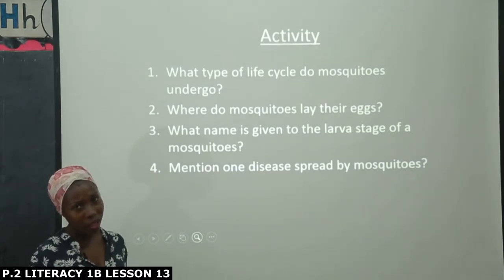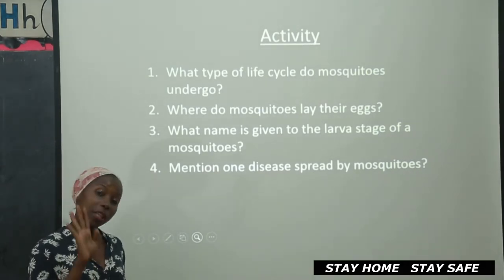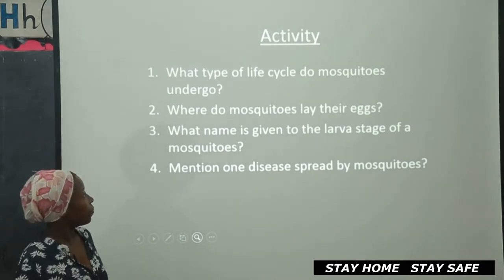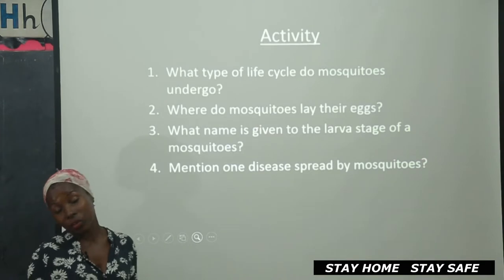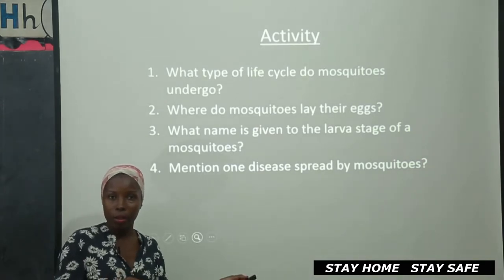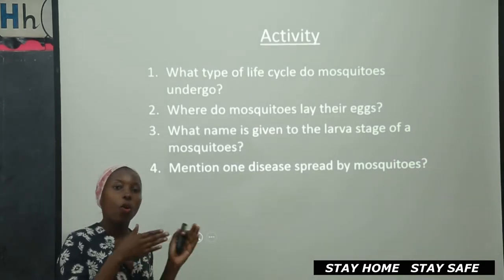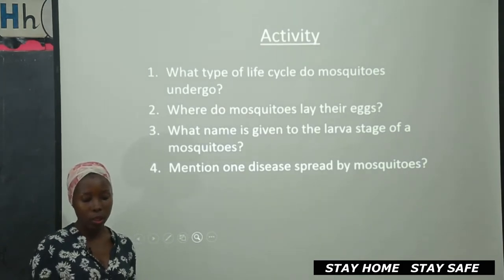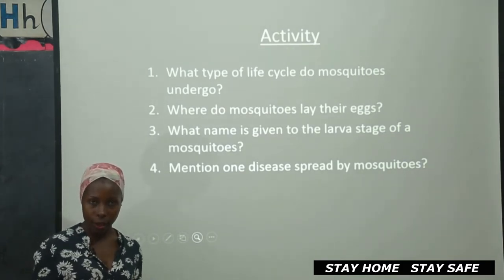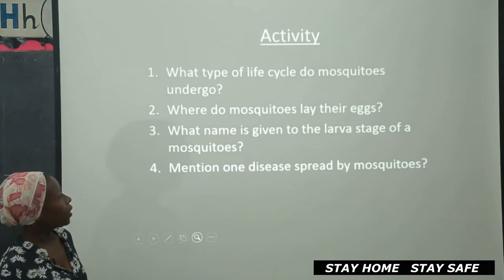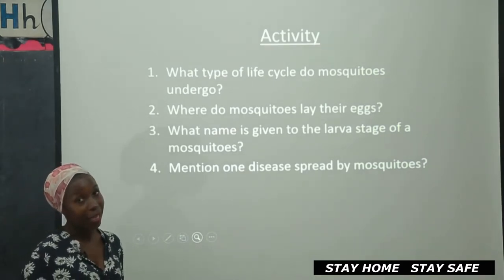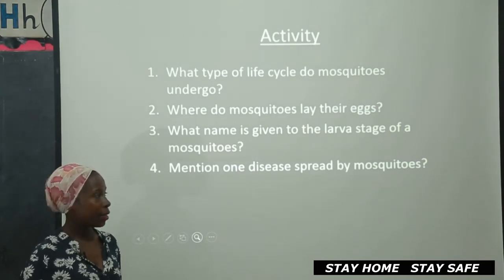Do you know why? Because it undergoes four stages of development. Where do the mosquitoes lay their eggs? We said you can write stagnant or still water. So the mother mosquito lays eggs in stagnant or still water. What name is given to the larva stage of a mosquito? We said that's a wriggler — it has a W at the beginning.